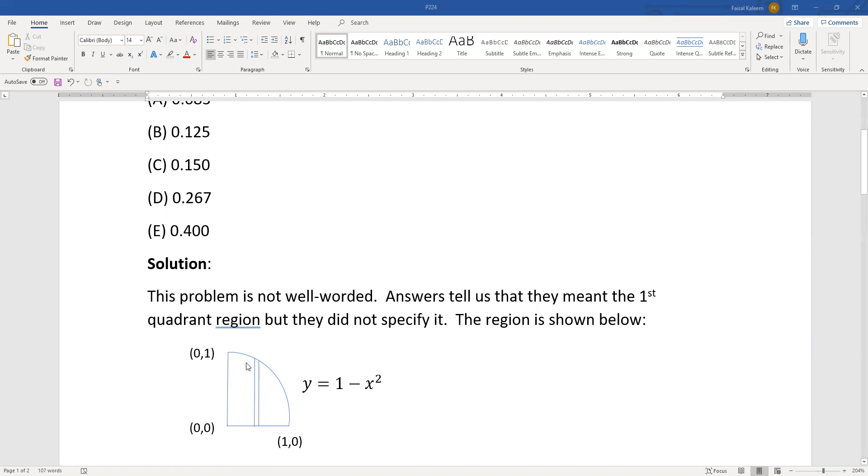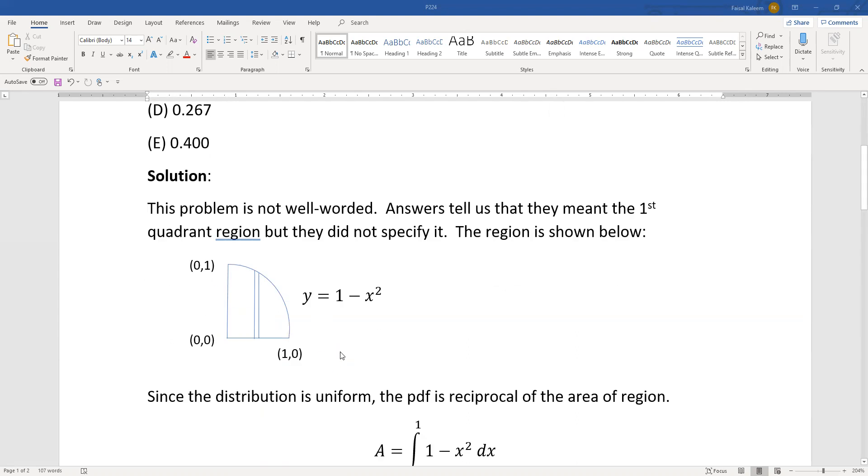Since the answers are positive, we see that it's the first quadrant region that they're talking about. So the region is as we discussed, the y equals 1 minus x squared is this curve and the two axes.